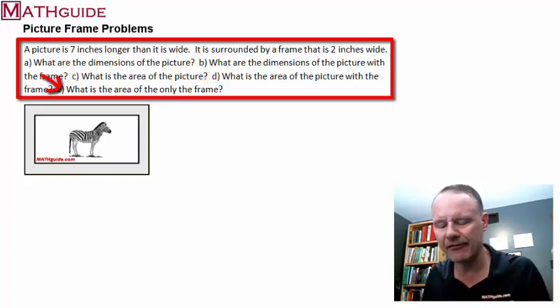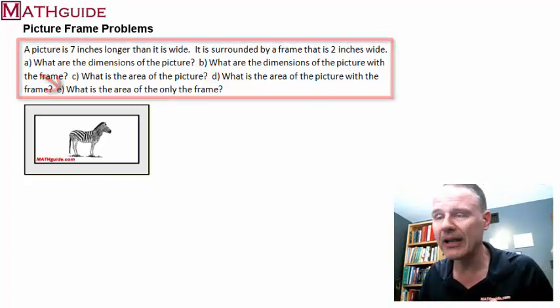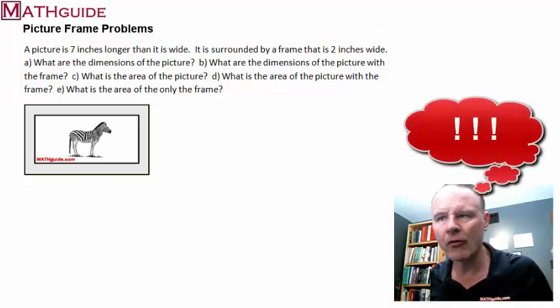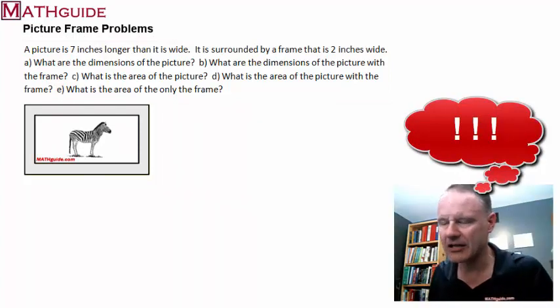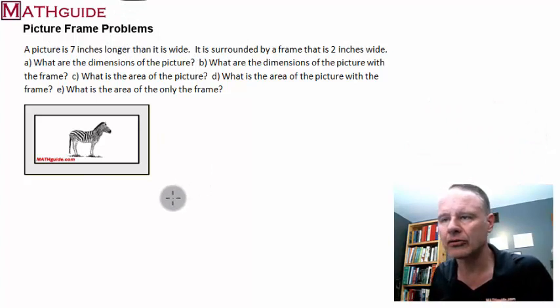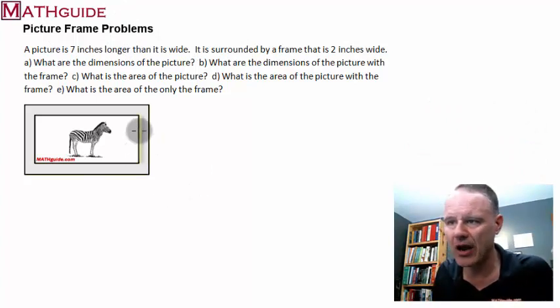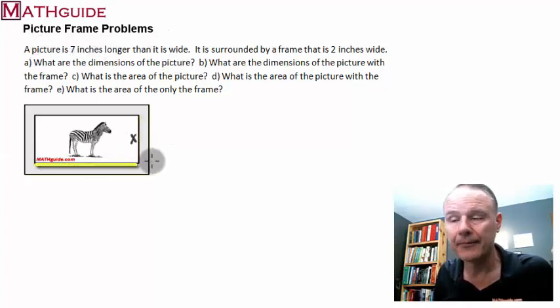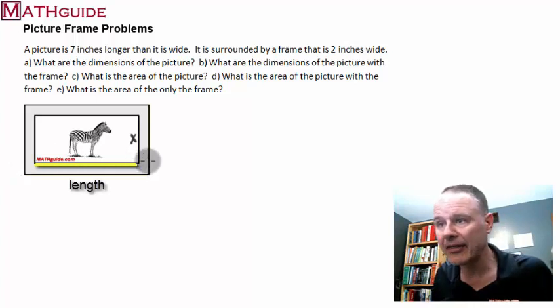When you're doing a standardized test question, this is sometimes how they look, and it's overwhelming. There's a lot of information going on. So let's pick at this one piece at a time. Right here, we're told the picture is seven inches longer than it is wide. So here's our width. We're going to call our width x, it's unknown. And since we're talking about what the length is, it says the picture is seven inches longer. That's telling us how to set up basically the length here.